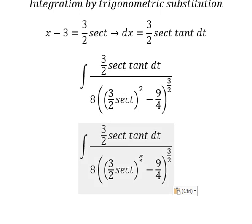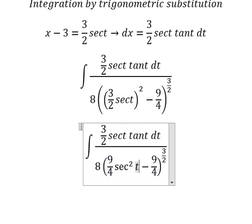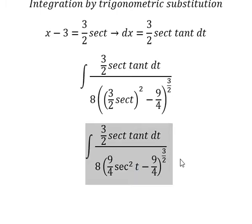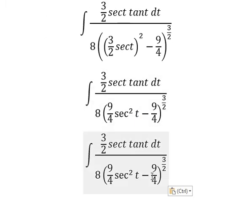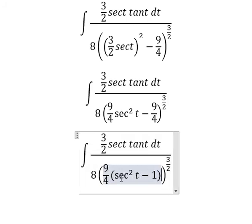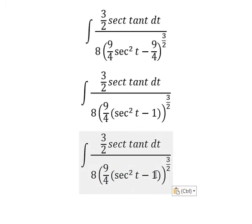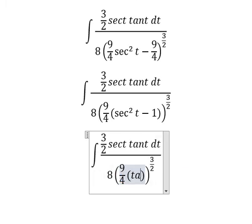So this one we change for 9 over 4 secant of t square. 9 over 4 and 9 over 4. We can do factorization.